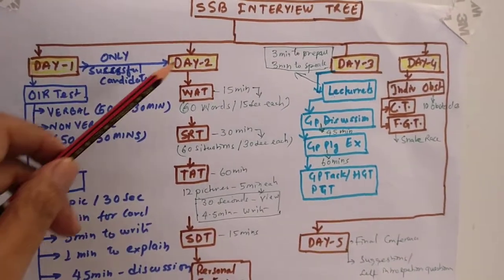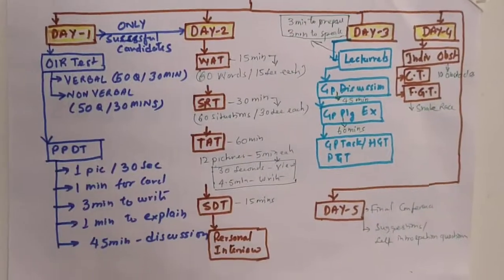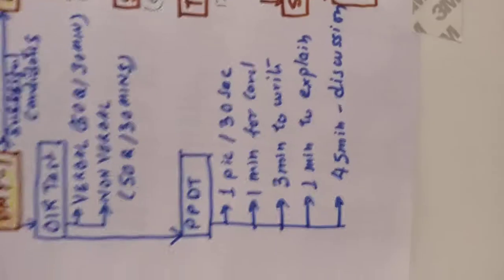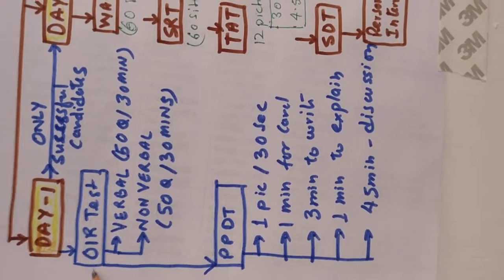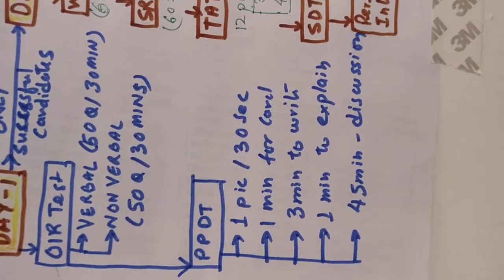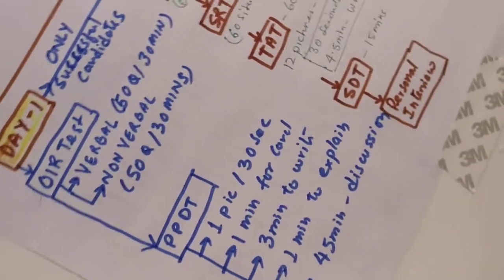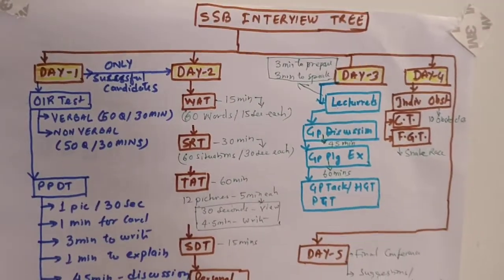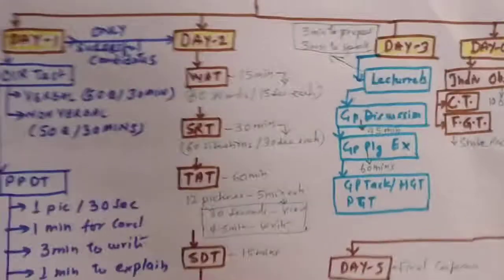Now let's go over to details of Day 1. First day they conduct OIR test. It has got two parts: verbal and nonverbal. Each test has 50 questions to be attempted in approximately 30 minutes. The number of questions actually vary from SSB to SSB - some places have 40 questions, some 50, some might give you even more questions.